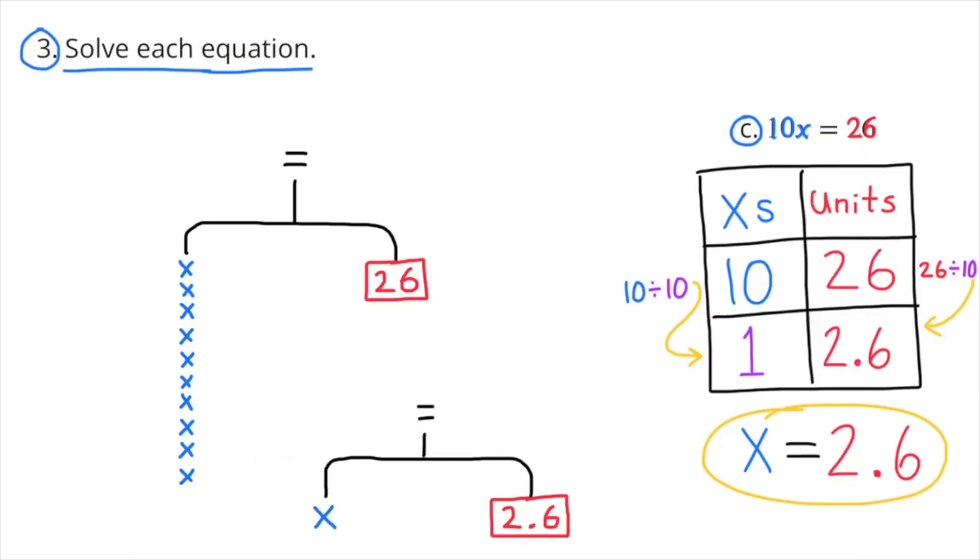C: 10 X equals 26. So again, I have a table with the X's on the left side and the units on the right. 10 X's divided by 10 equals 1 X. Since I divided that column by 10, I have to divide the other column by 10. 26 divided by 10 equals 2 and 6 tenths.